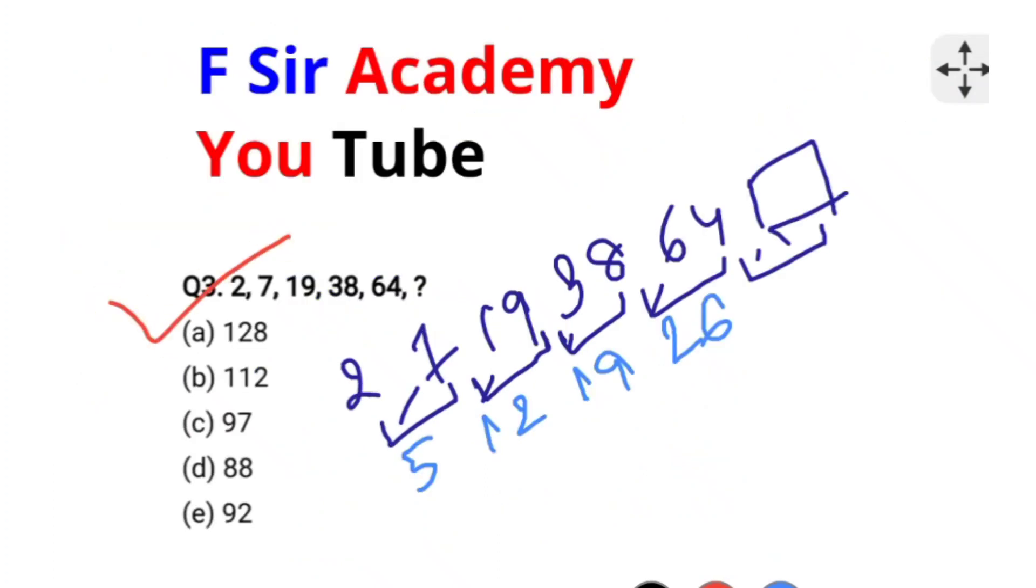Let's see question number 3. Start from second term to first term. So 7 minus 2 is 5, 19 minus 7 is 12, and 38 minus 19 is 19, 64 minus 38 is 26. Let's see 12 minus 5 is 7, 19 minus 12 is 7. So in each case, the difference is 7. 26 minus 19 is 7.